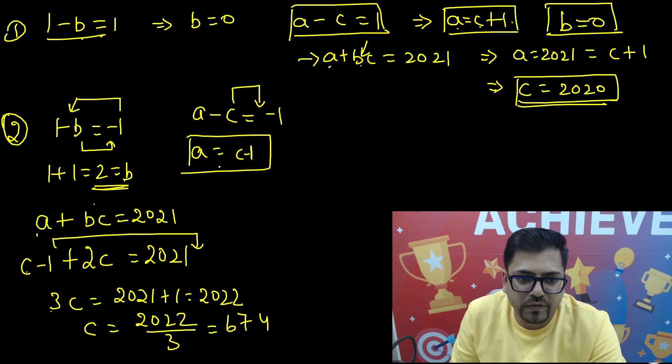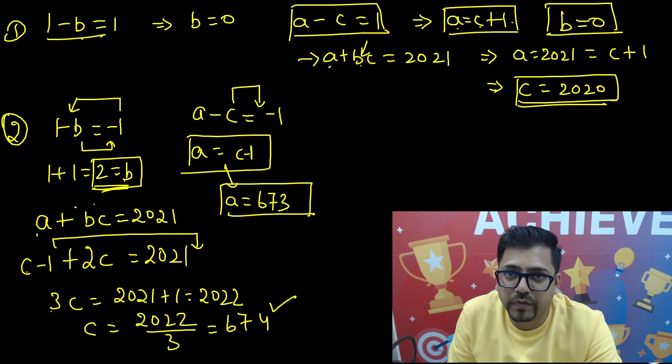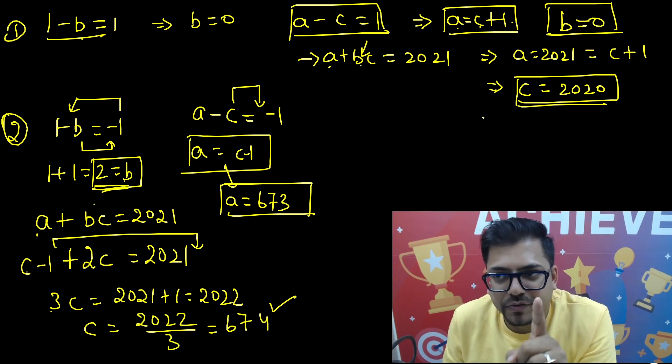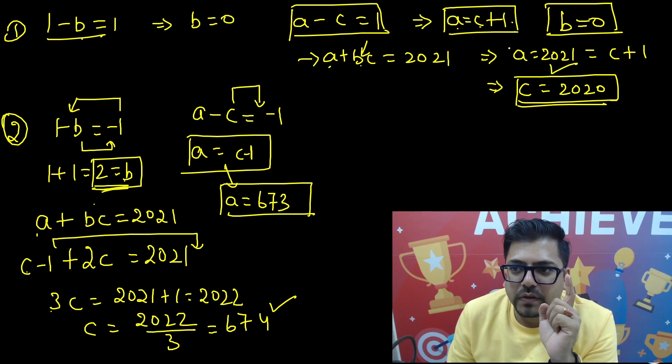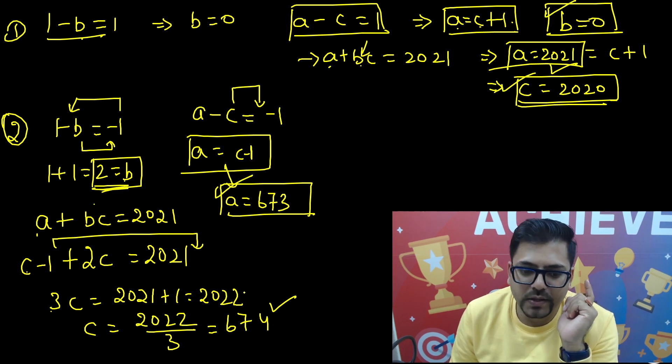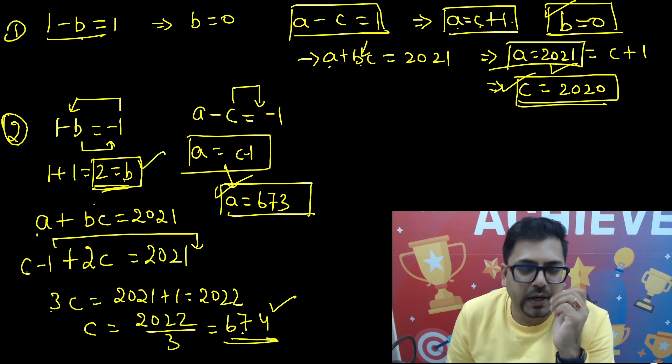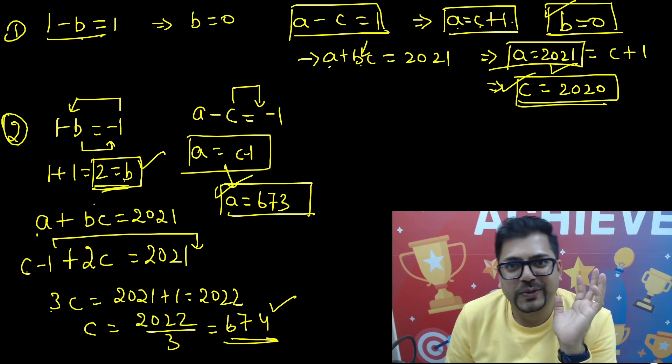So if C is 674, very easily I can put the value A is 1 less than C. So C minus 1, so it will be 673. So we have got A 673, C 674, and B is 2. So we have got another value. So basically we have got two sets of values. In the first set we got A as 2021, B as 0, and C as 2020. The second set of values: A 673, B is 2, and C is 674. And hence we have got two sets of values for this particular equation.